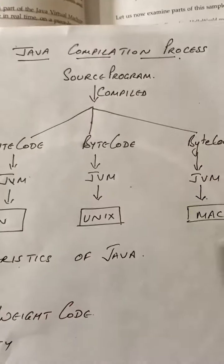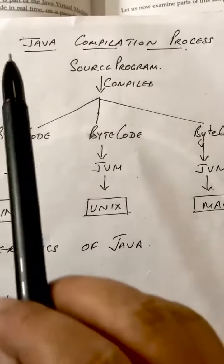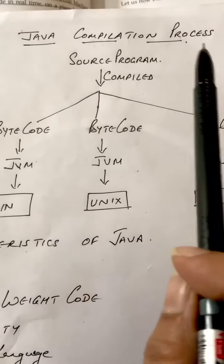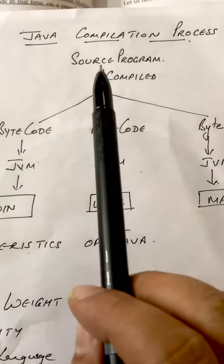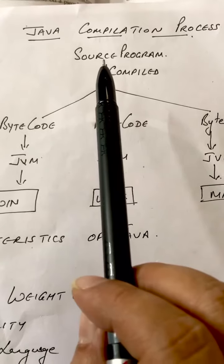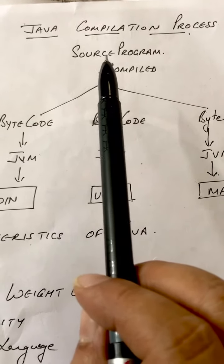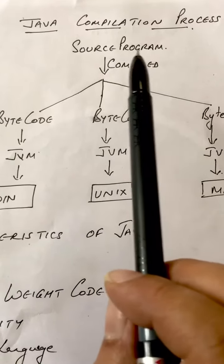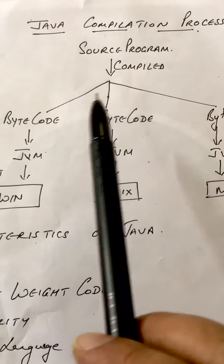Okay students, now in this part we are going to understand the Java compilation process. We write a source program, which is the program we write in English that is understood by us, and that is compiled into bytecode.